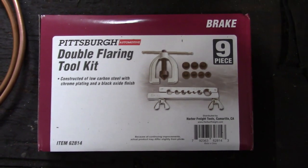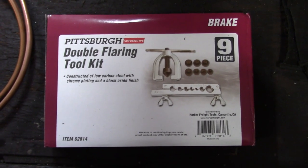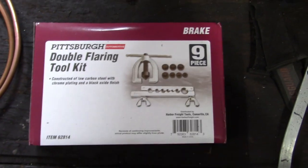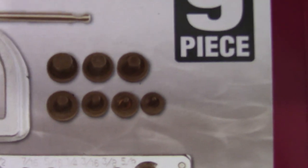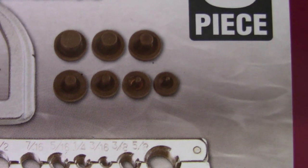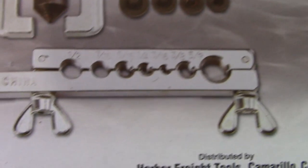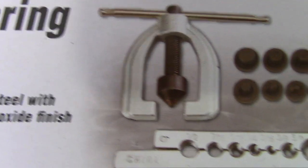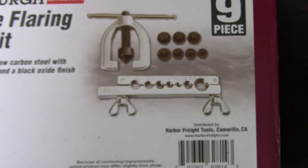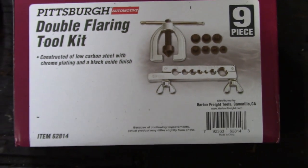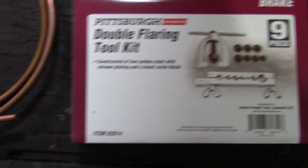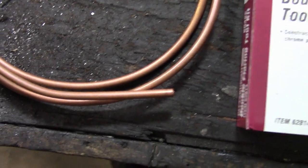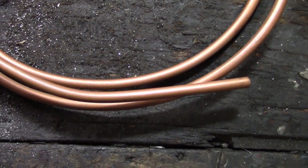This is a conventional double flare kit. It has the little doublers that create the double flare and not allow the clamp here to just give you a single flare. So this is everything that's required except for a tubing cutter which I'm sure we've got here around the shop. This is about $25 at Harbor Freight. And we're going to use it to do some tests on this copper tubing that we have here.